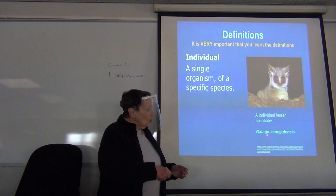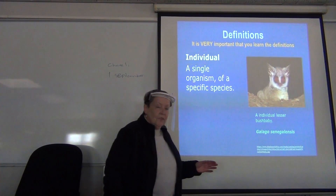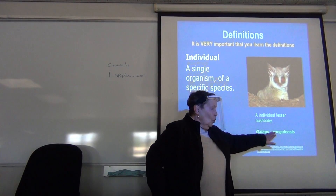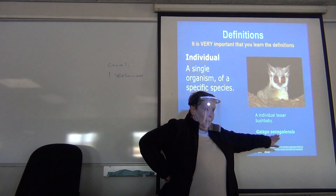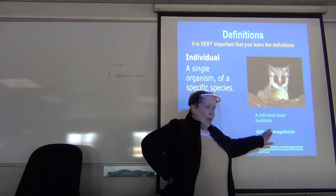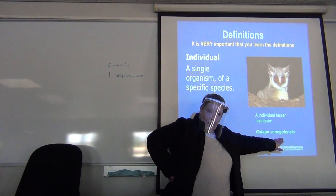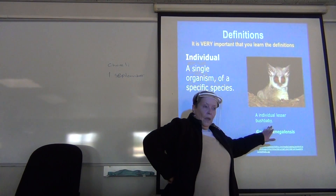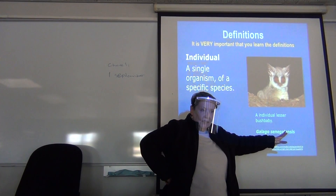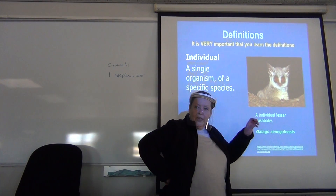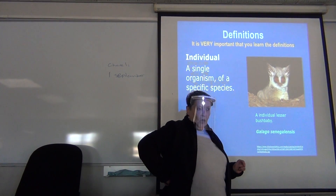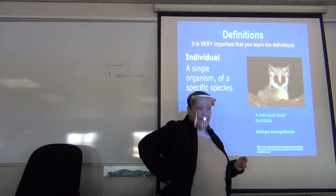A scientific name, which you learned in grade 8, is a two-word name. This is the genus name, and this is the species name. When it is typed, it is always in italics. When you write it, or write any part of it, you are to underline it.